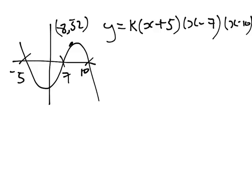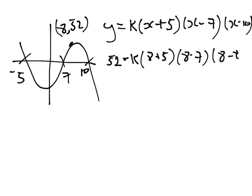And when we replace that, we get 52 equals some number k, and it's 8 plus 5, 8 minus 7, 8 minus 10. So we get 52 equals k times 13 times 1 times negative 2, so minus 26k equals 52, so k equals negative 2.